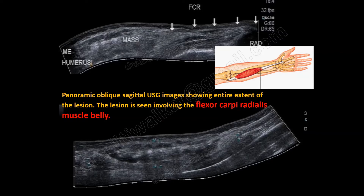However, the MSK radiologist within me was somehow not content, and I again started scanning the lesion. To my surprise, this lesion was in fact taking origin from the medial epicondyle of the humerus and ending into a tendinous structure which was further inserting onto the base of the second metacarpal, indicating that this lesion was indeed located within the flexor carpi radialis muscle belly.